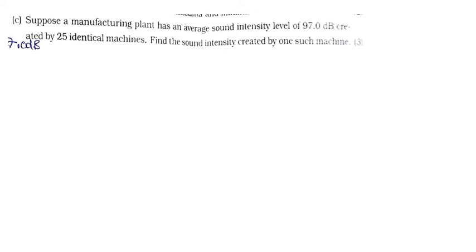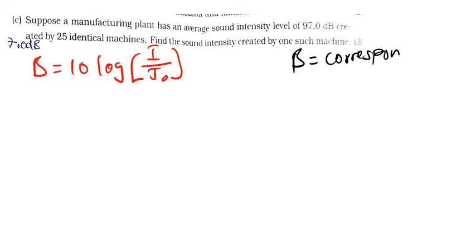So the formula for the decibel, we know that the decibel is given by 10 log, open brackets, the intensity divided by intensity initial. Let's just review. This B is the corresponding decibel. And the SI unit is dB like that.